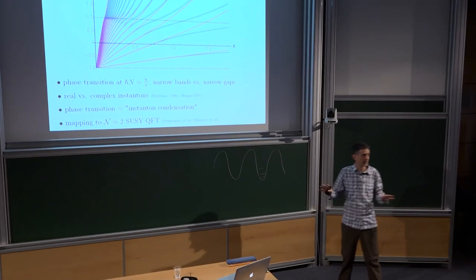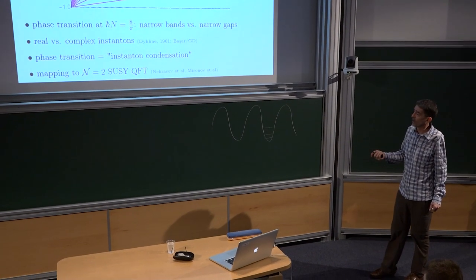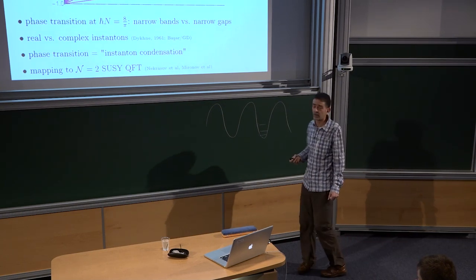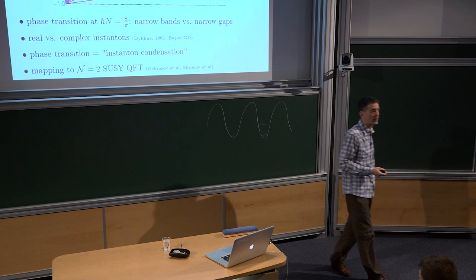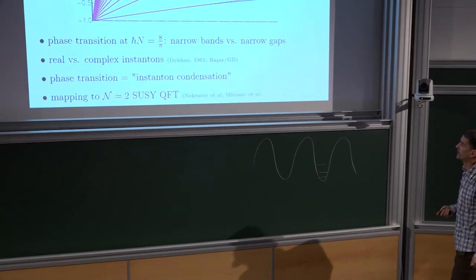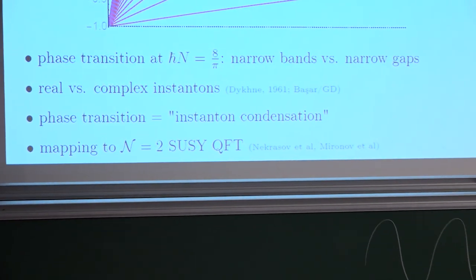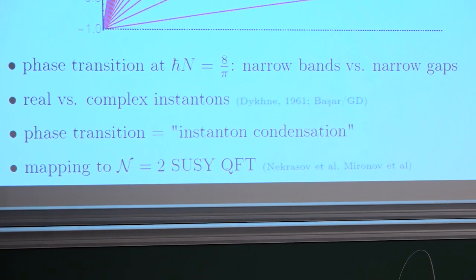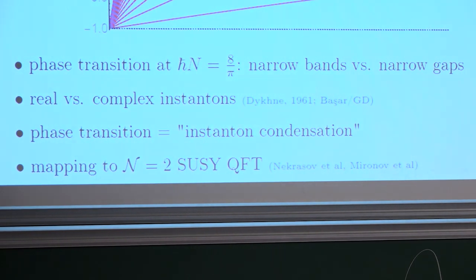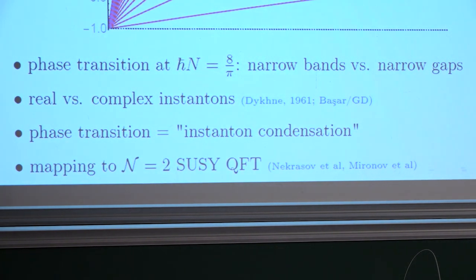All of this can be worked out in complete detail in this simple model. This simple model is not so simple — there's an exact mapping to a famous N=2 supersymmetric quantum field theory by Nekrasov et al., made explicit in work by Mironov et al. and many others. So even though I'm talking about a quantum mechanical model, there's some very interesting quantum field theory buried in this problem.